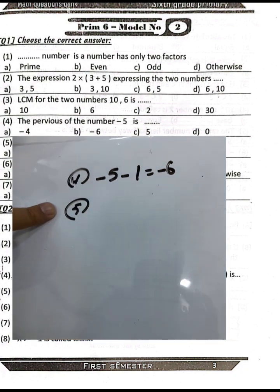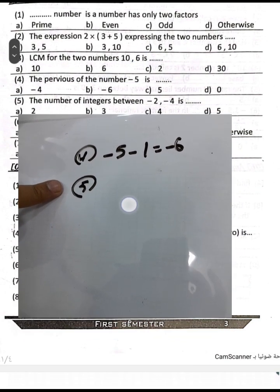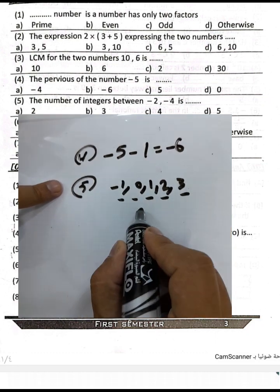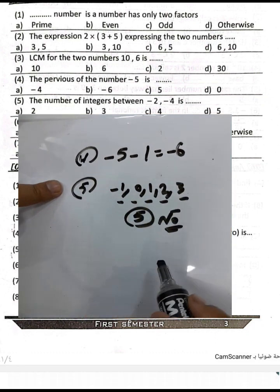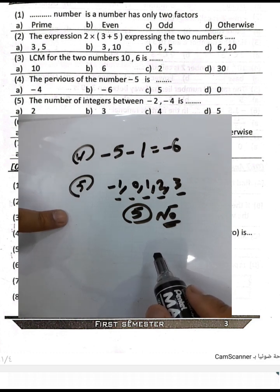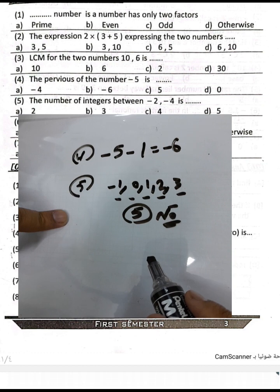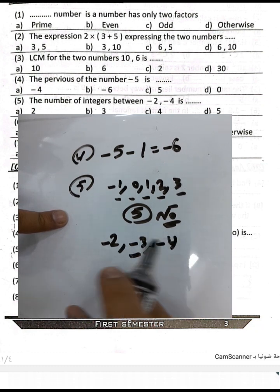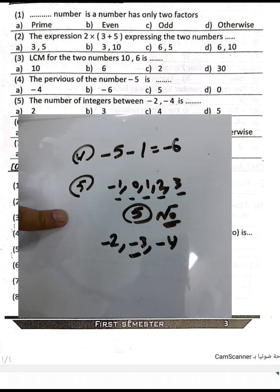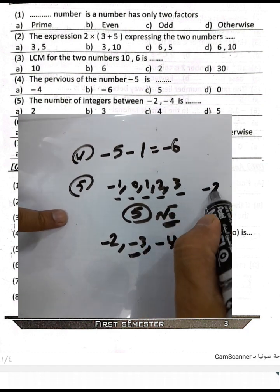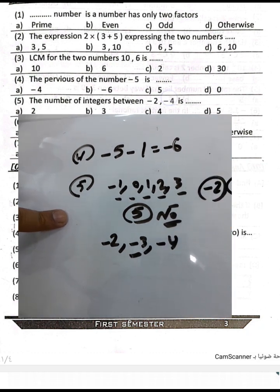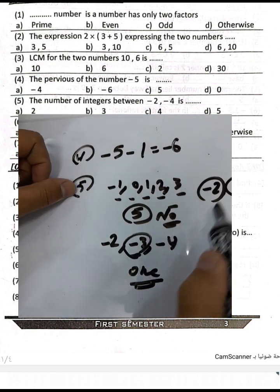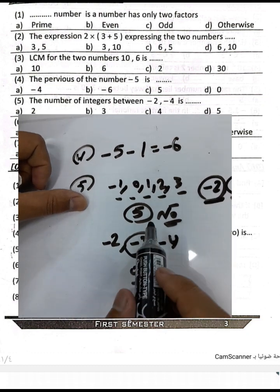Question five: the number of integers between negative two and negative four. We have negative one, zero, one, two, three — counting gives us five numbers between negative two and negative four. But wait — between negative two and negative four we actually have only negative three, which is one number.